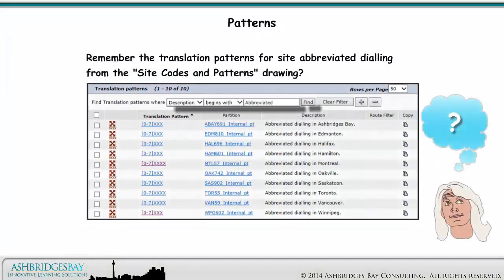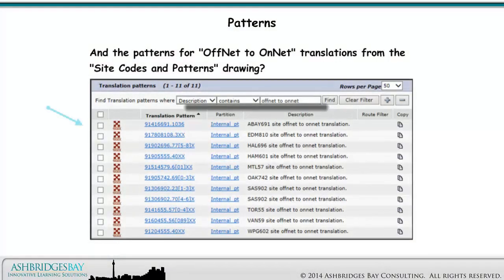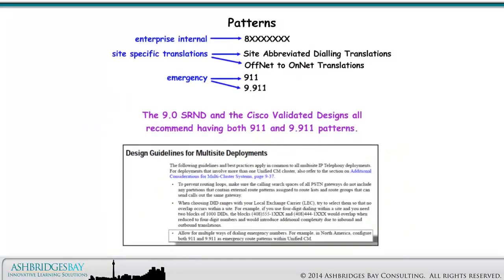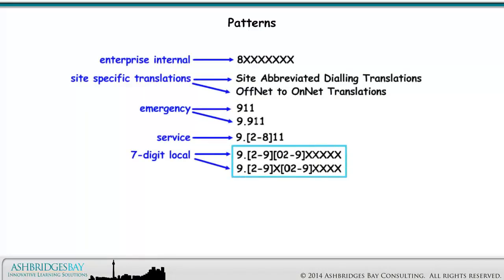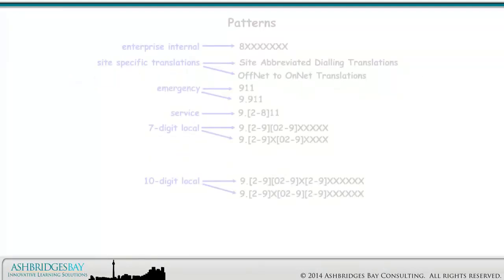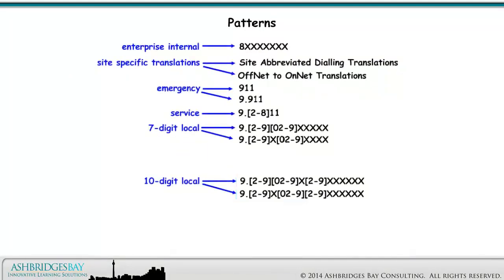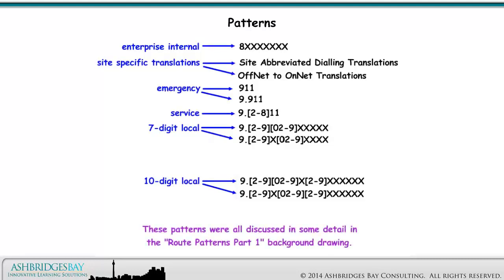Remember the translation patterns for site-abbreviated dialing and the patterns for off-net to on-net translations from the site codes and patterns drawing. We have two patterns for emergency numbers — the 9.0 SRMD and the Cisco Validated Designs all recommend having both 9-1-1 and 9.9-1-1 patterns. We have a pattern for service codes 2-1-1, 3-1-1, 4-1-1, and so on. We include 7-digit patterns for dialing 7-digit local numbers, ensuring these patterns won't cause post-dial delay for the shorter service codes. We need 10-digit patterns for dialing 10-digit local numbers. These patterns were all discussed in some detail in the Route Patterns Part 1 background drawing.